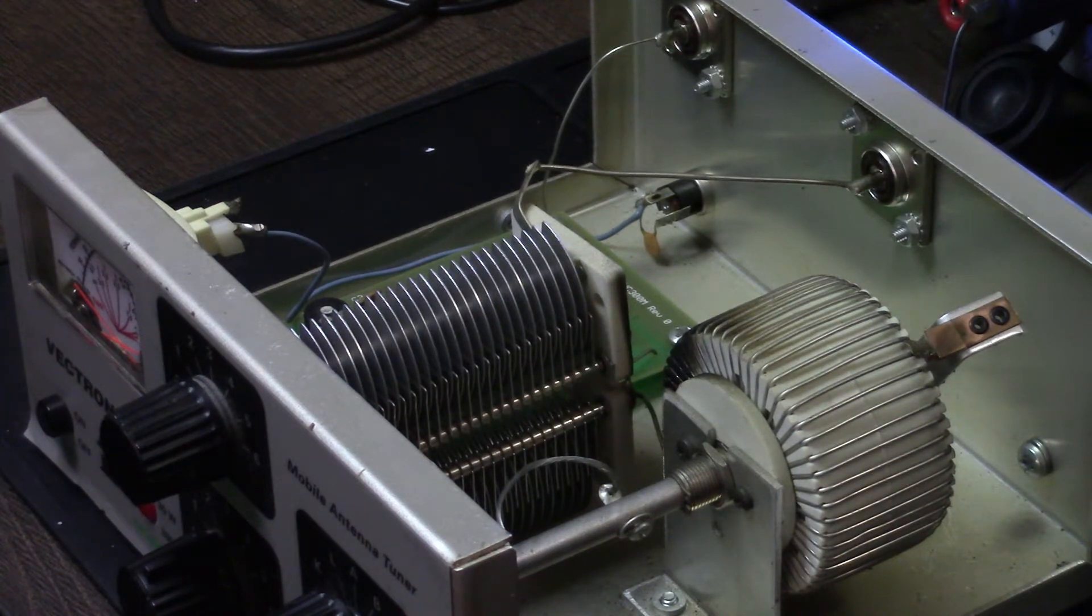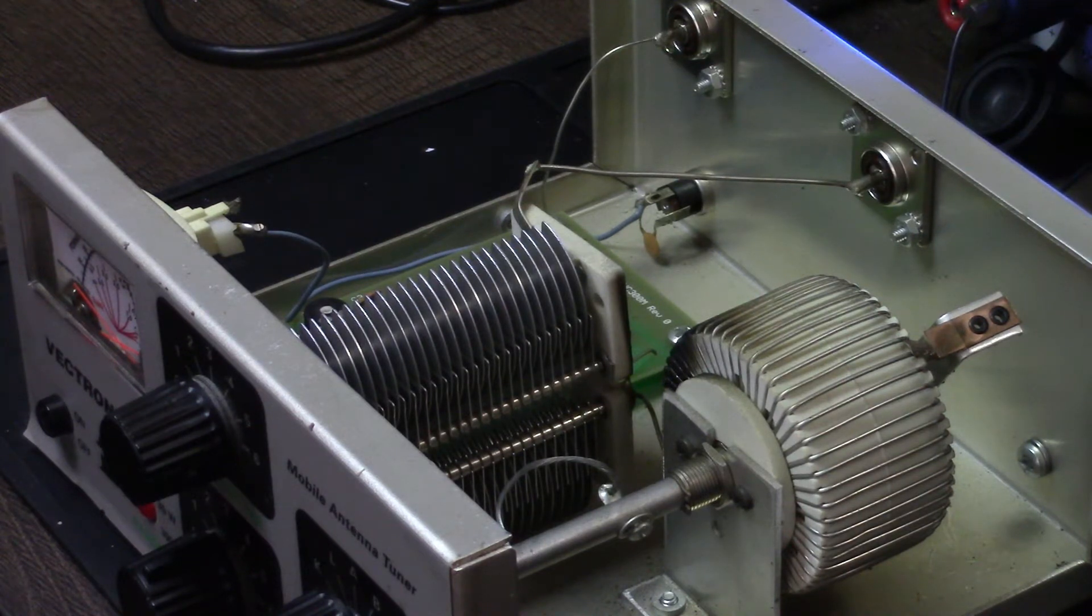This is an older tuner, it's a Vectronics VC-300M. I picked it up on eBay about three months ago for like 80 bucks, so I didn't have a big investment in it, but it was working really well. I was using it primarily with my Icom IC-7300 and using it with both an 80 meter dipole and a 10 meter vertical antenna. One night I was trying to tune up my 80 meter dipole to use it on 160 meters, and of course that's not an easy thing to do.